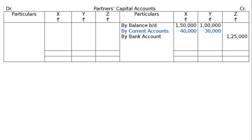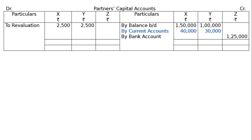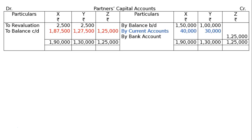Next one is by bank account — A part of the adjustment. Z is to introduce Rs. 1,25,000 as capital. There is bank in this balance sheet, so write down 'by bank.' Then to revaluation account: Rs. 2,500 in X's column and Rs. 2,500 in Y's column — revaluation loss. Please write in revaluation account 'by capital accounts,' not current accounts. Total the credit side, take it to the debit side, and find out balance carried down. The closing capital balances will be: for X, Rs. 1,87,500; for Y, Rs. 1,27,500; for Z, Rs. 1,25,000.